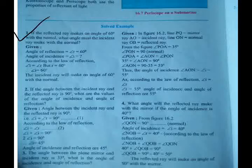If the reflected ray makes an angle of 60 degrees with the normal, what angle must the incident ray make with the normal? What is given in the question? Angle of reflection, that is angle R, is equal to 60 degrees. You have to find the angle of incidence, that is angle I.